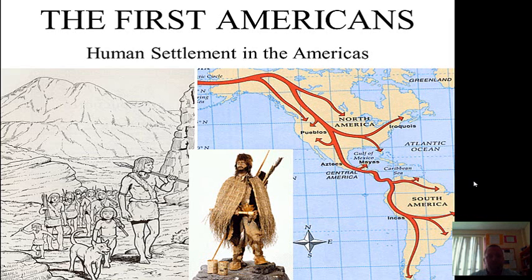Welcome to Unit 2. Unit 2 is called the First Americans. In this unit, we will look at how humans arrived here in the Americas. The Americas are made up of North America, Central America, and South America.